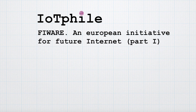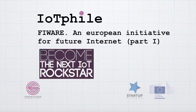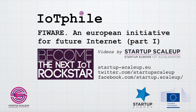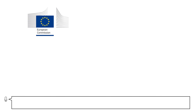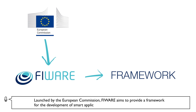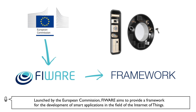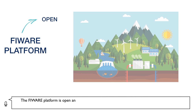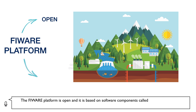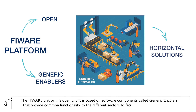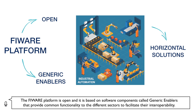FIWARE, a European initiative for future Internet, part 1. Launched by the European Commission, FIWARE aims to provide a framework for the development of smart applications in the field of Internet of Things. The FIWARE platform is open and is based on software components called generic enablers that provide common functionality to the different sectors to facilitate their interoperability.